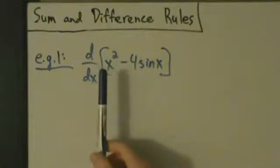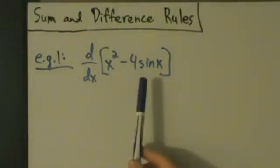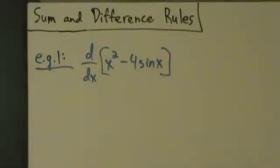Here we have d/dx of x² minus 4 sine x. In other words, find the derivative of x² minus 4 sine x.